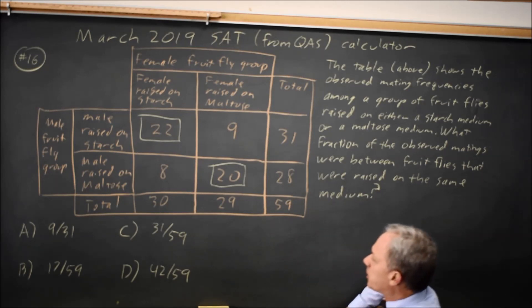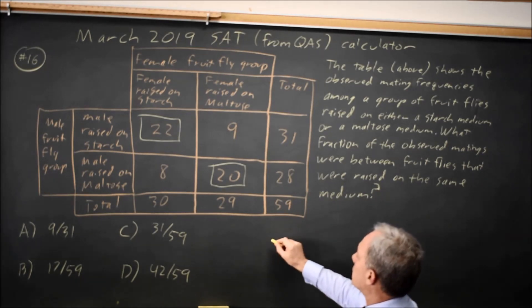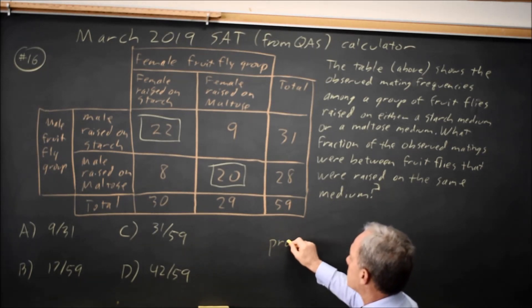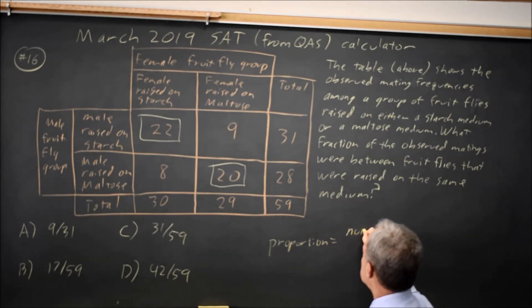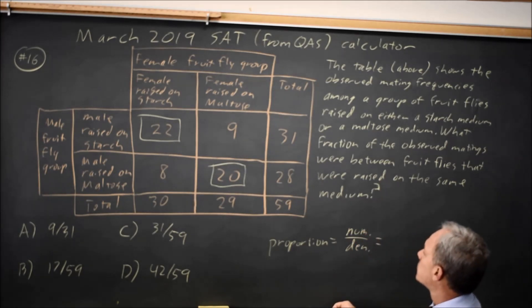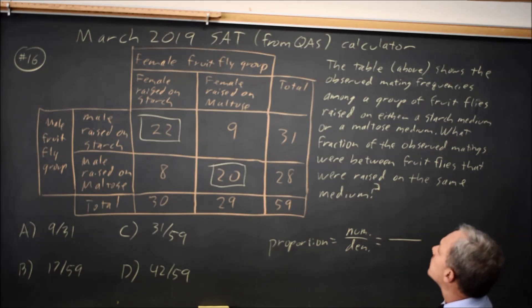If I'm looking for a probability or a proportion from a table, I'll write proportion equals a numerator over a denominator, where the denominator is the total number of items that could have occurred. So the total number of matings in this case is 59.